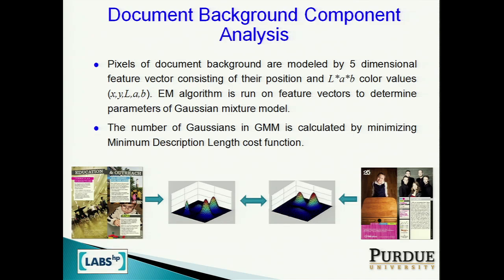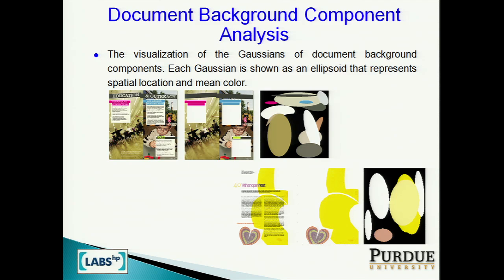We run an EM algorithm to learn a Gaussian mixture model. The number of mixture components is calculated by the MDL (minimum description length) cost function. We learn a Gaussian mixture model that represents a pixel's position given the color of that pixel in the background. Since the feature vectors are five-dimensional and impossible to show on a plane, we show each Gaussian as an ellipsoid with its mean color. You can see a document next to its background component and next to the ellipsoids representing the Gaussian mixture model.